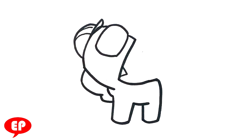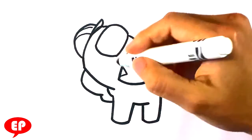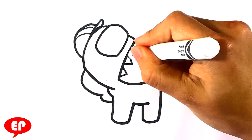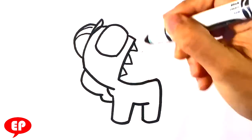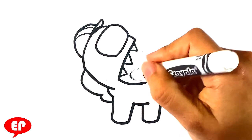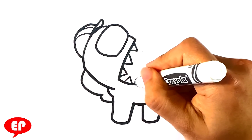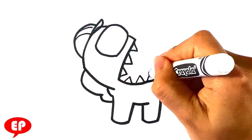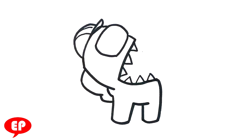Triangle here, for the teeth, another triangle, another triangle. Triangle here, triangle here, triangle here, for the bottom row of teeth.